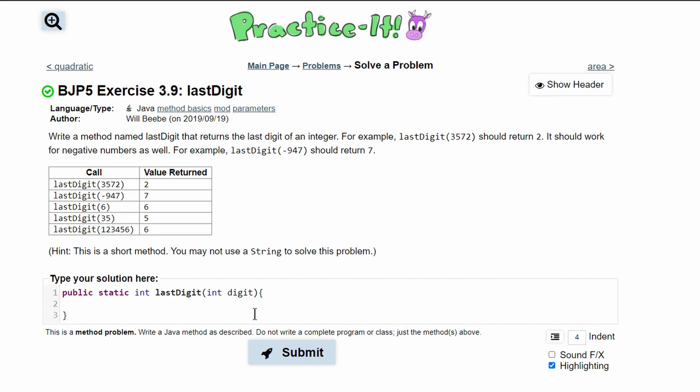To return the last digit of an integer, hypothetically let's just say this was called 3.572. To get this last value we need to take the modulus of it.